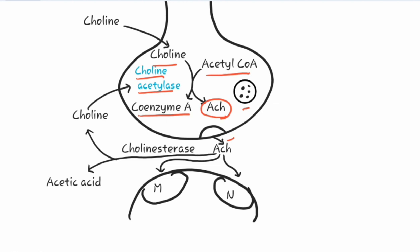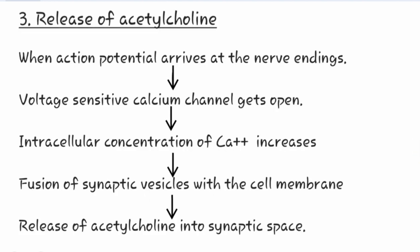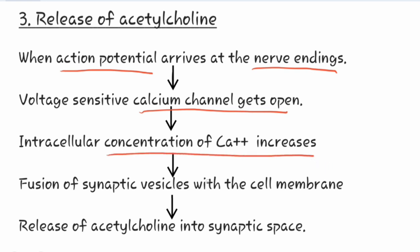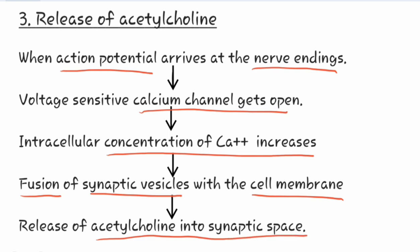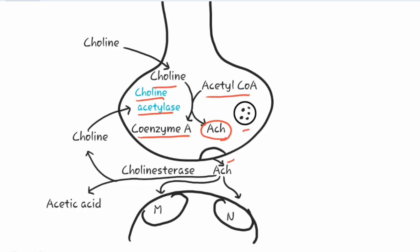The third step is release of acetylcholine, which is the main part of parasympathetic transmission. When an action potential arrives at the nerve ending, the voltage-sensitive calcium channel opens, and the intracellular concentration of calcium increases. This increased calcium concentration causes fusion of synaptic vesicles with the cell membrane, resulting in the release of acetylcholine into the synaptic cleft.